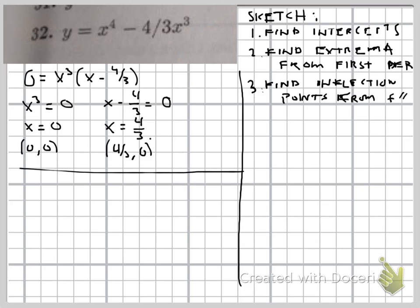The next thing that we're going to look at is the extrema. So max and min points, we're going to set y prime equal to zero. And those will give us the critical points. So our y prime, from using the power rule, would be 4x cubed minus 4x squared.